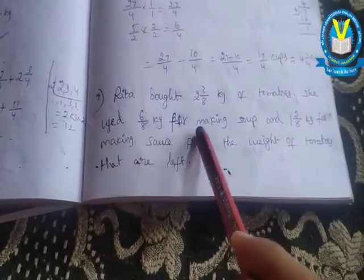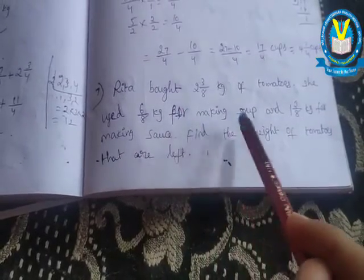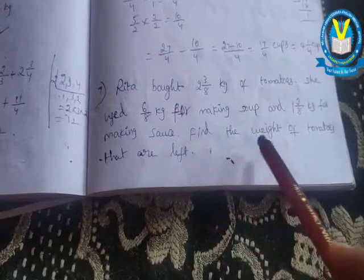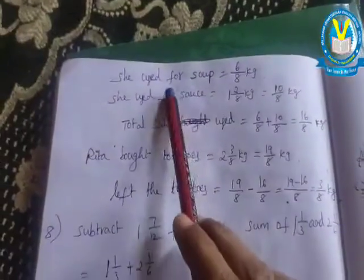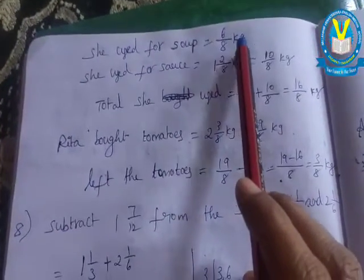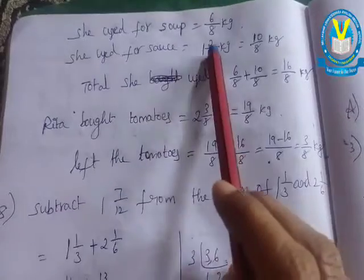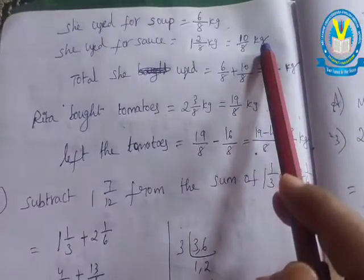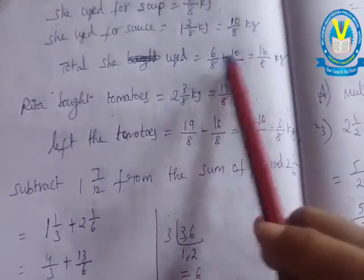Last one, seventh. Rita bought two and three-eighths cases of tomatoes. She uses six by eight cases for making soup and two by eight cases for making sauce. Find the weight of tomatoes that are left. She used six by eight cases for soup and two by eight cases for sauce. Change mixed to improper. Add what she used - these are like fractions.